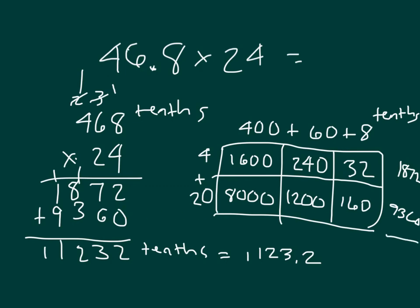If I added those together there, just to make sure I'm doing my math correctly, I get 11,232 tenths again, just like my standard algorithm, and then I can convert it into standard form. That would be my answer up here.